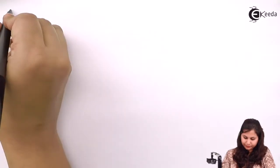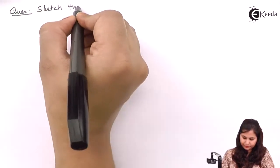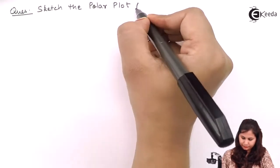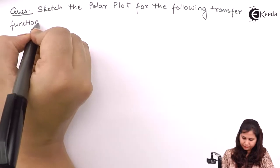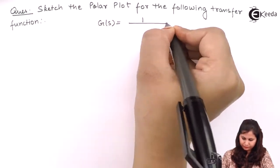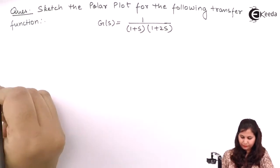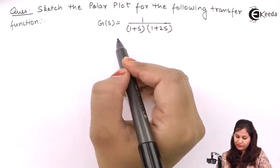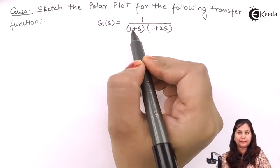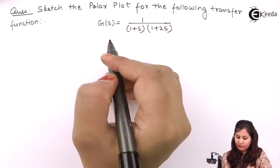Hello friends. In this video we are going to solve a problem on how to sketch the polar plot of a system when its open loop transfer function is given to us. Our problem is to sketch the polar plot for the following transfer function: G(s) = 1 / [(1 + s)(1 + 2s)]. Let's try to solve this.